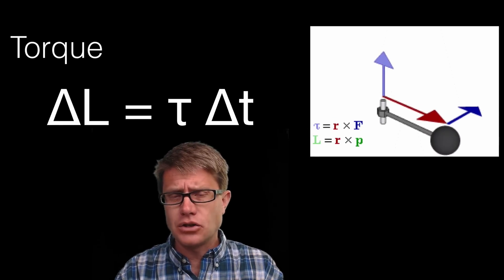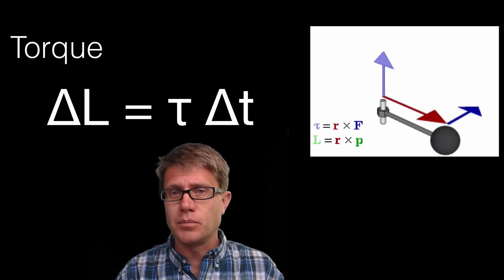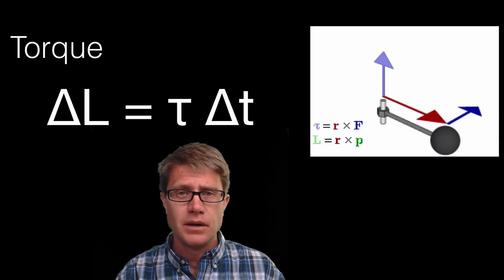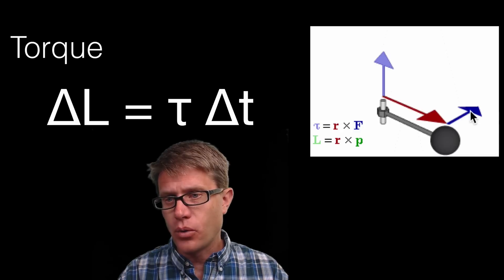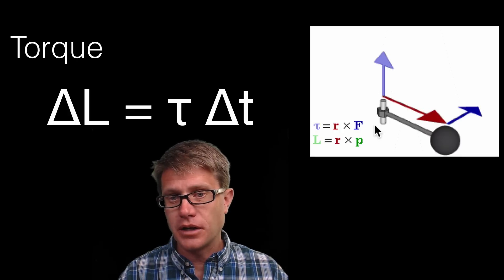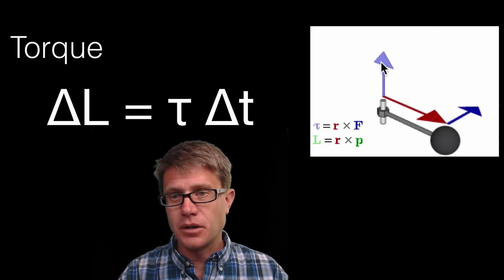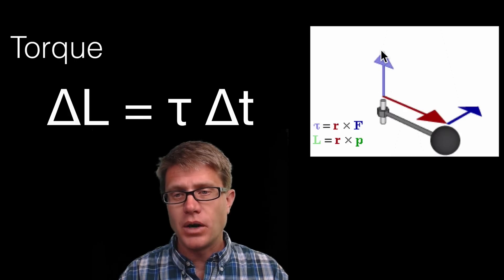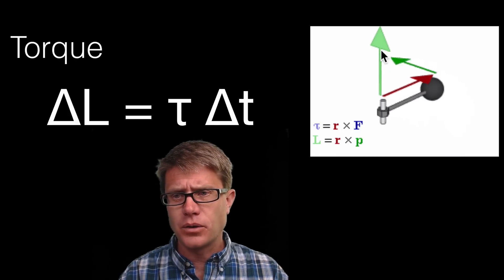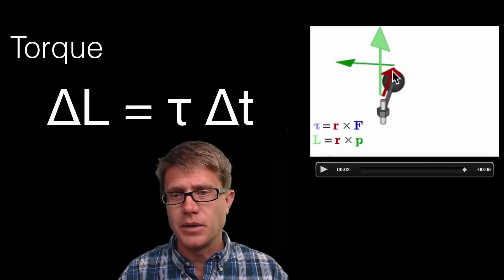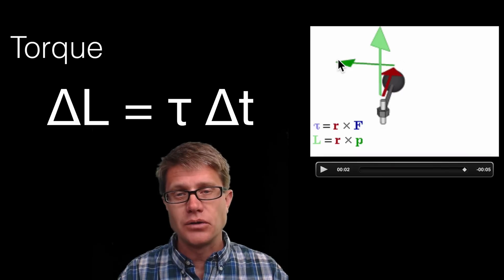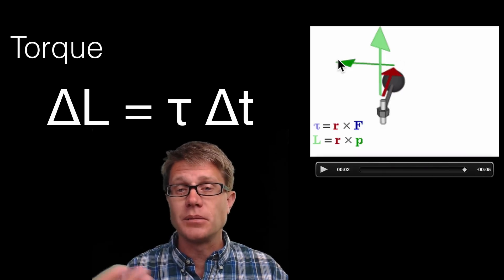You should also understand how a net torque over a given period of time changes angular momentum — this is analogous to impulse in translational motion. If we apply a force perpendicular to the lever arm, we get a torque in a direction. As we add force, we build up angular momentum in that direction over time.